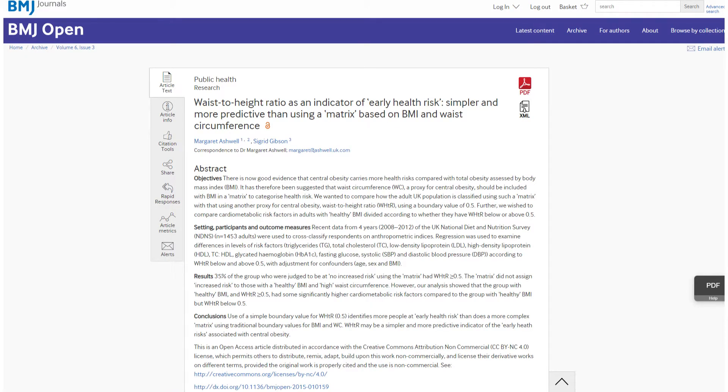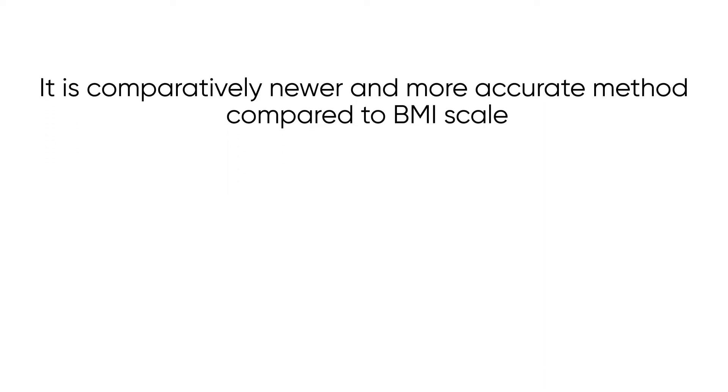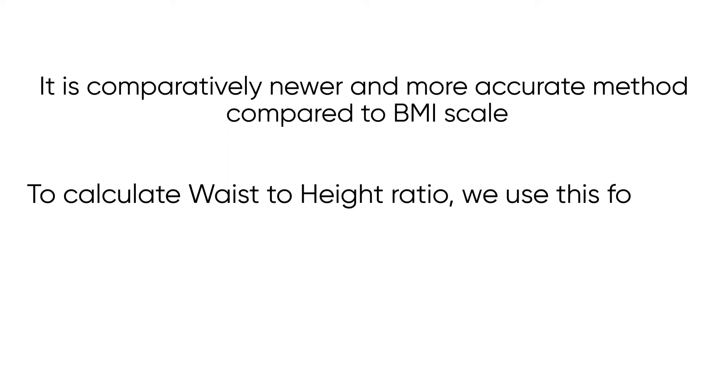The second method to measure obesity is the WHtR scale, also called Waist to Height Ratio. It is a comparatively newer and more accurate method compared to the BMI scale. To calculate the Waist to Height Ratio, we use this formula.